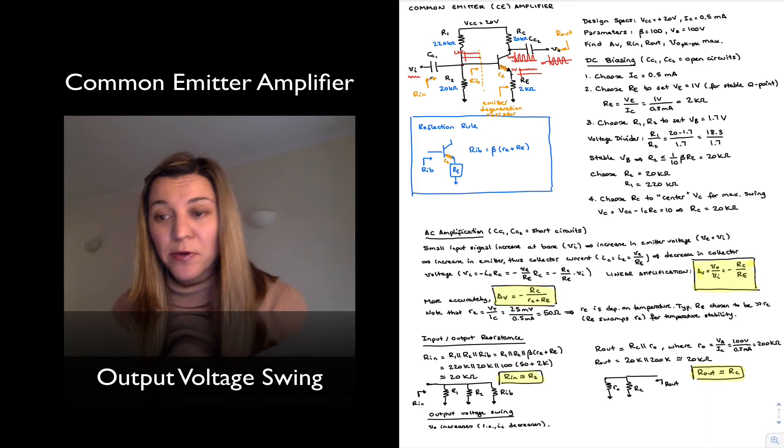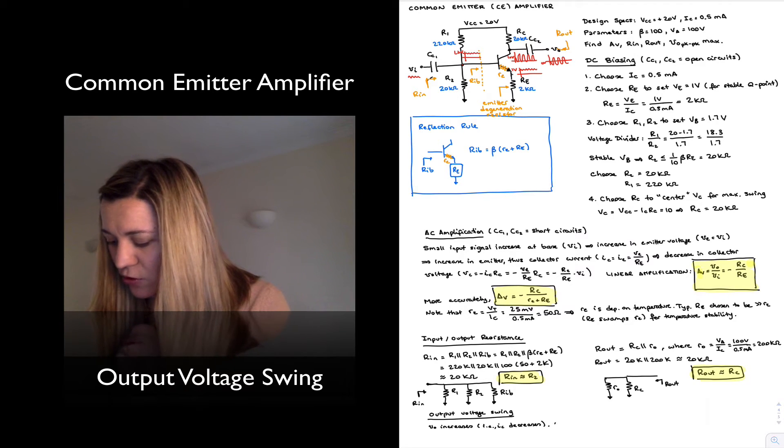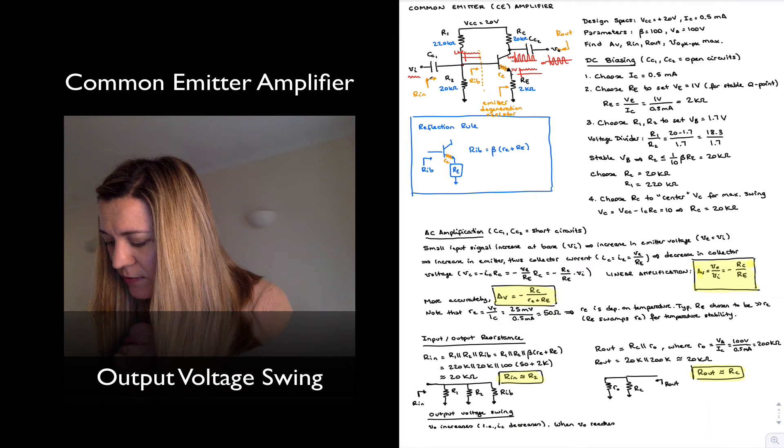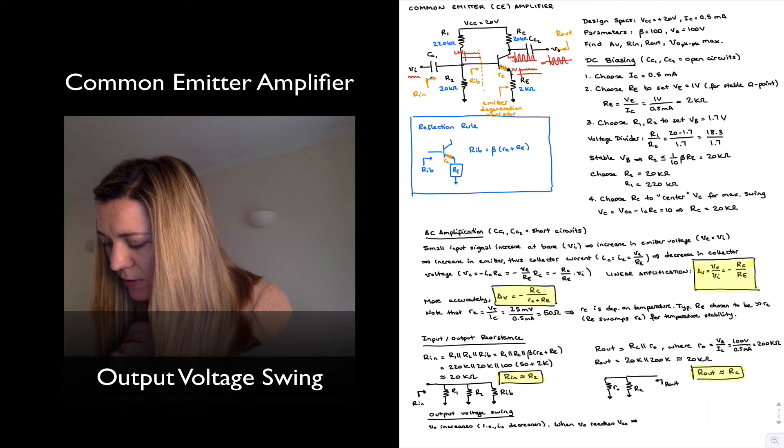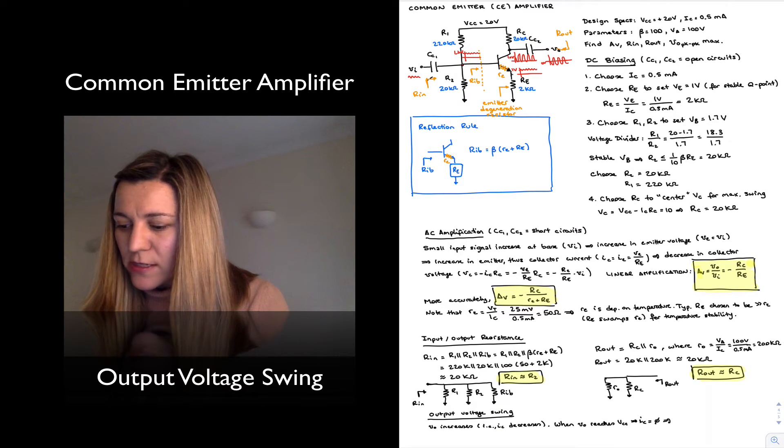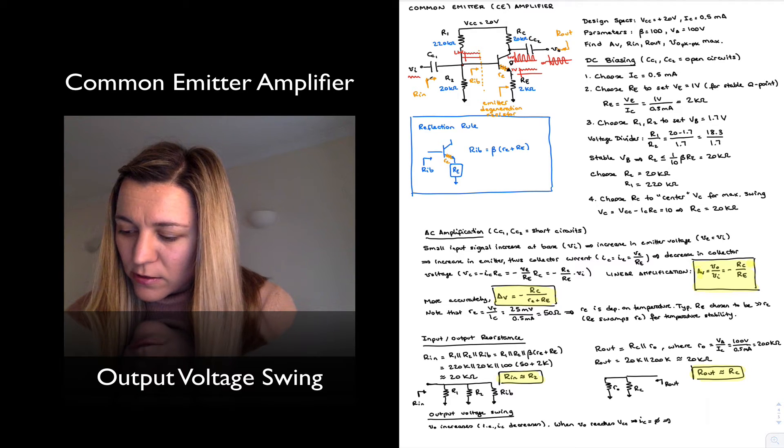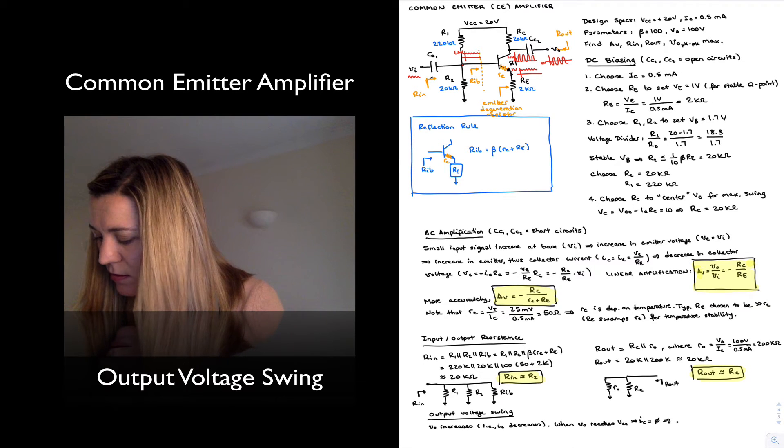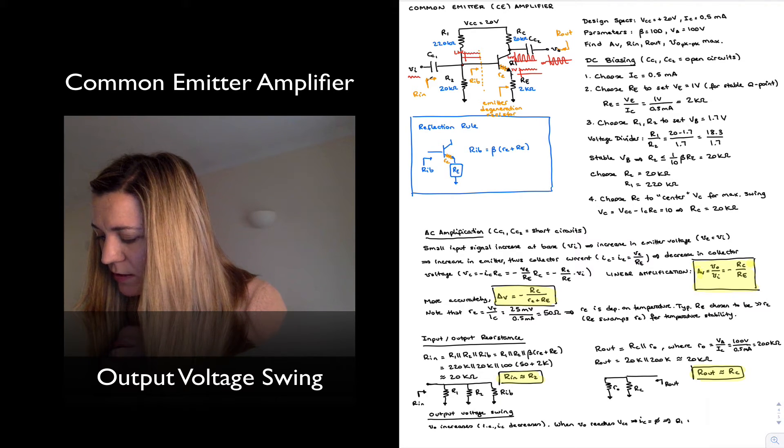This provides our upper limit for the voltage. When Vout reaches VCC, that means IC is equal to zero, and therefore the transistor Q1 is in cutoff.